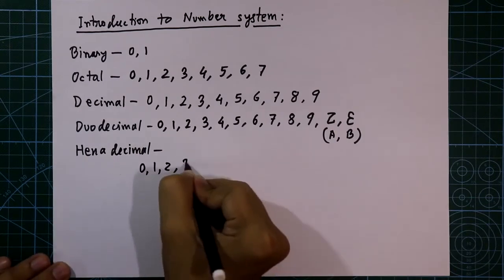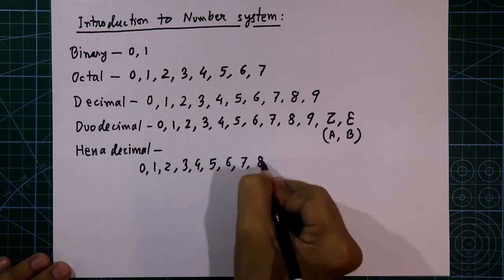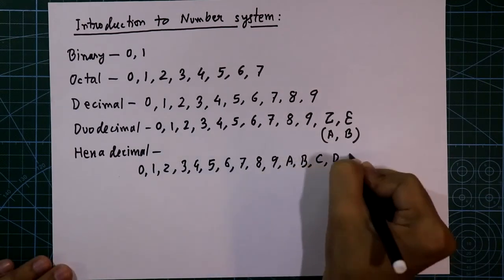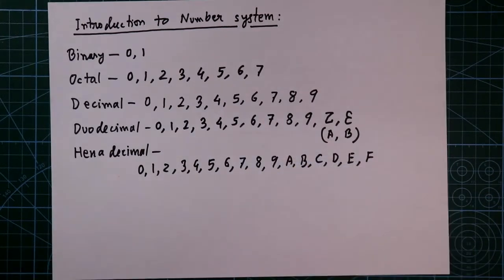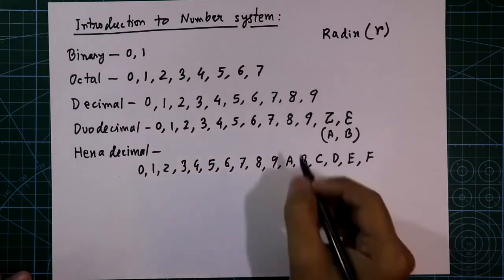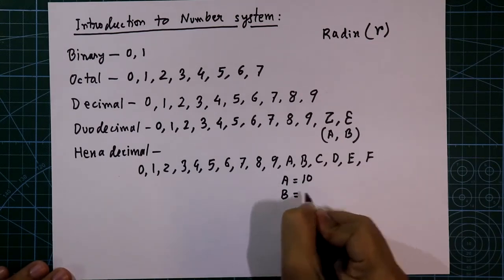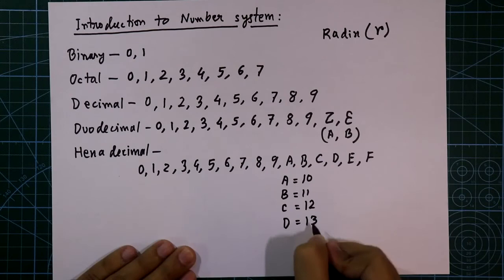In hexadecimal number system, it has 0 to 9 and after that, it is A, B, C, D, E, F. So, total we have 16 unique digits. Here, the value of A is 10, B equal to 11, then 12, 13, 14, and 15.